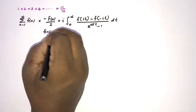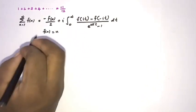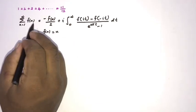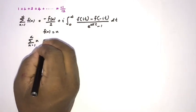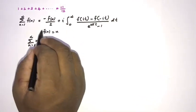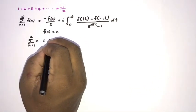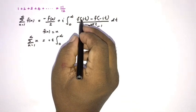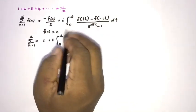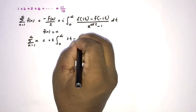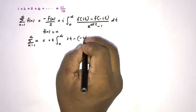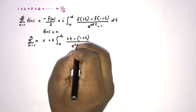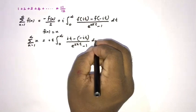We take f(n) = n, so n goes from 1 to infinity. With f(n) = n, we have f(0) = 0. Then we add i times the integral from 0 to infinity of [f(it) minus f(-it)] over (e^(2πt) - 1) dt, where f(it) = it and f(-it) = -it.